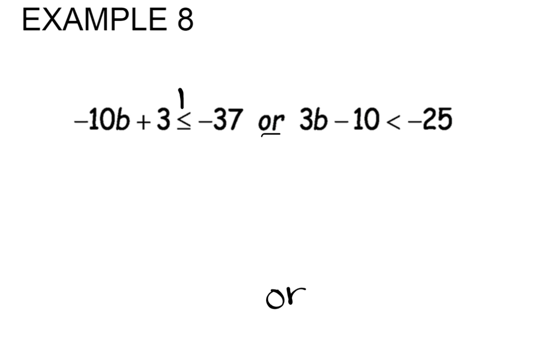On our first inequality, we are going to be solving for the variable B by subtracting the constant 3 on both sides of the inequality. That leaves us with negative 10B is less than or equal to negative 40.